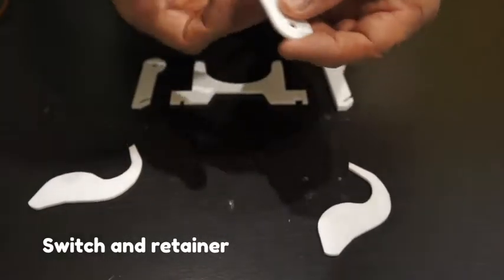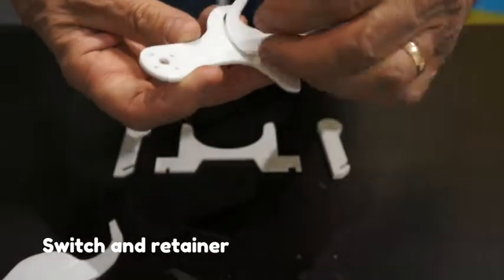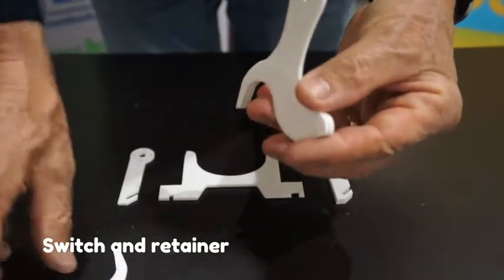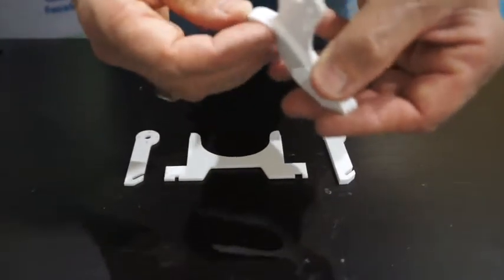Now here is the switch and retainer. Here is the switch—it's made of three parts. It's very easy, but you should really care about aligning the three parts with each other.